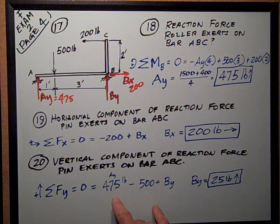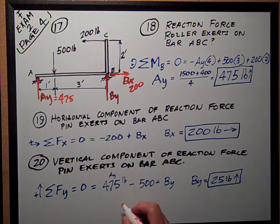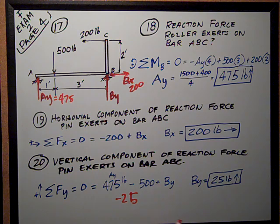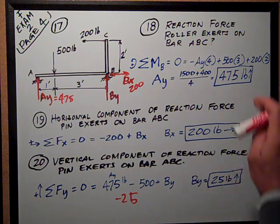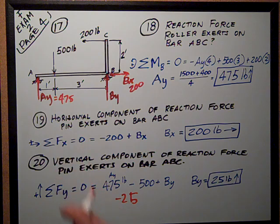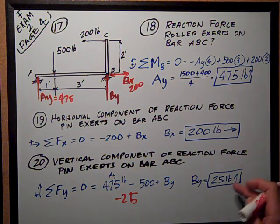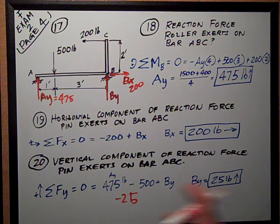So I do combine my terms. 475 minus 500 is negative 25, plus BY. Take the 25 to the other side of the equal sign, I get BY is equal to 25 pounds. As a quick check, I just look at it. I've got 500 pounds applied down. I've got my total reactions in the Y direction of 475 and 25. That's equal to 500 pounds. I feel good about it.